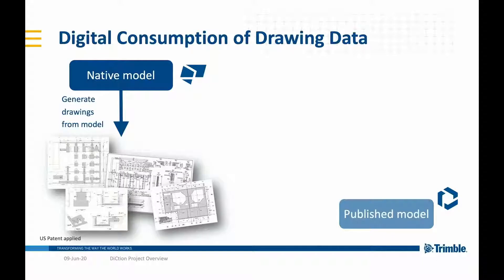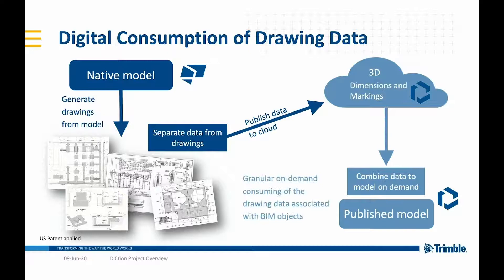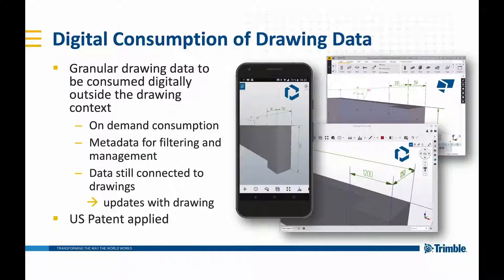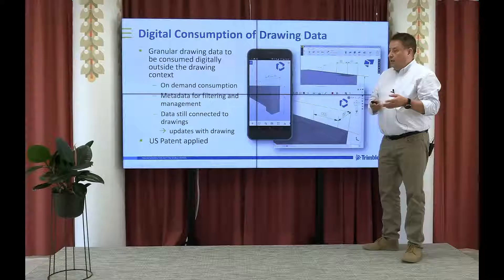Starting with drawing data consumption: Tekla Structures is a modeling tool where we create BIM models and produce drawings. When you create a drawing, you create dimensions and markings. What we are doing in Diction is separating this dimension and marking data and publishing it to the Trimble Connect cloud, then reconnecting that data to the published model. This leads to a situation where users can have a mobile application with which they can call up dimensions from drawings, with metadata for filtering content — all the time connected to the drawing. In other words, you have a digital twin of the drawing data content. We have applied for a patent for this.